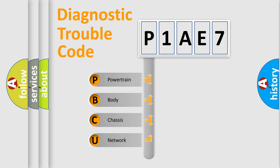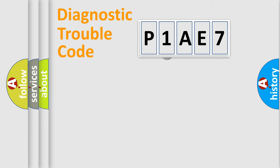We divide the electric system of automobile into four basic units: Powertrain, body, chassis, network. This distribution is defined in the first character code.